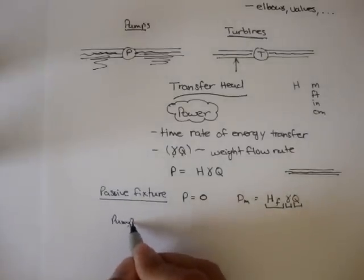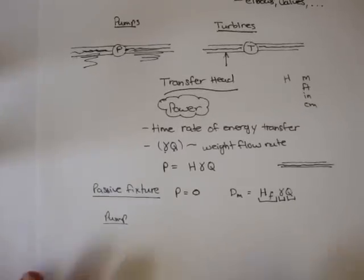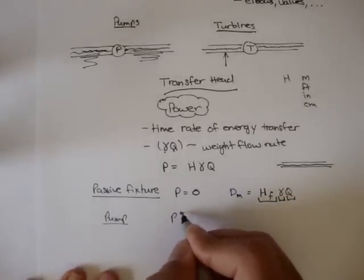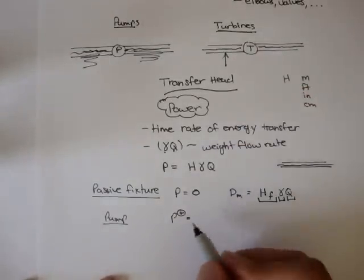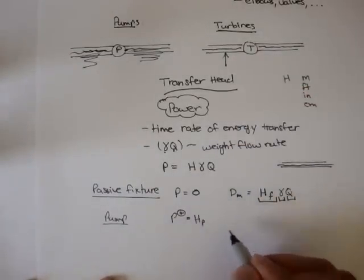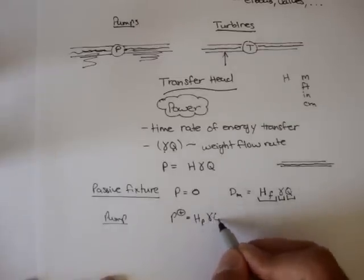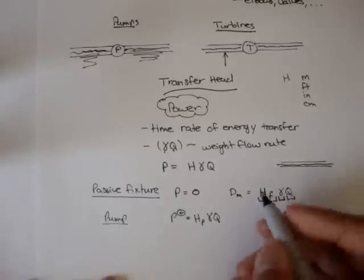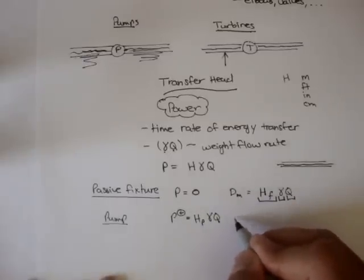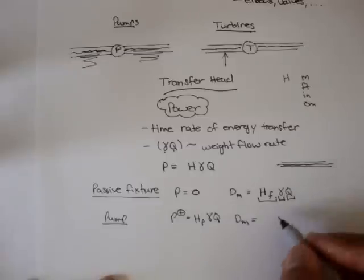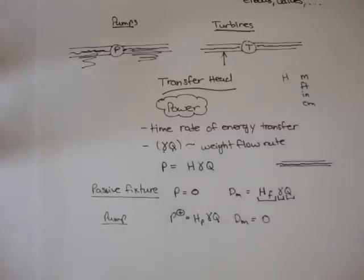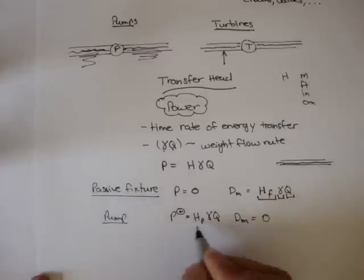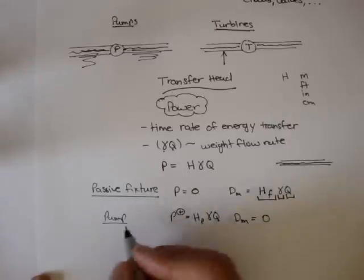For a pump, the power is positive because it's giving the water energy. It's usually H sub P times the weight flow rate. The mechanical dissipation losses are essentially zero — or very, very small — because compared to the power, the power is much bigger than the mechanical dissipation.